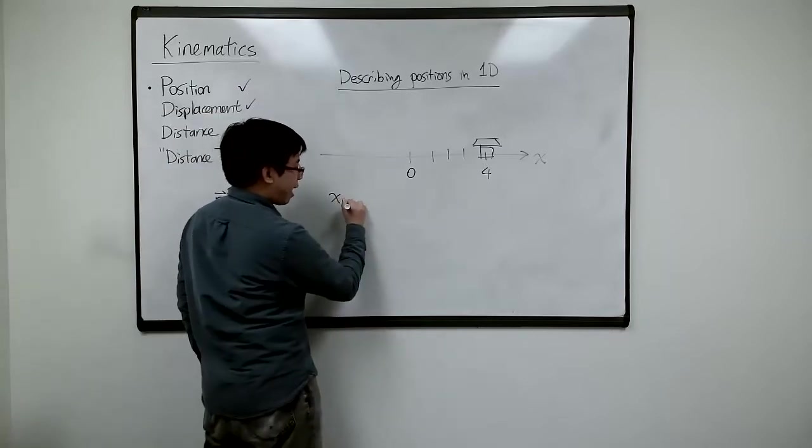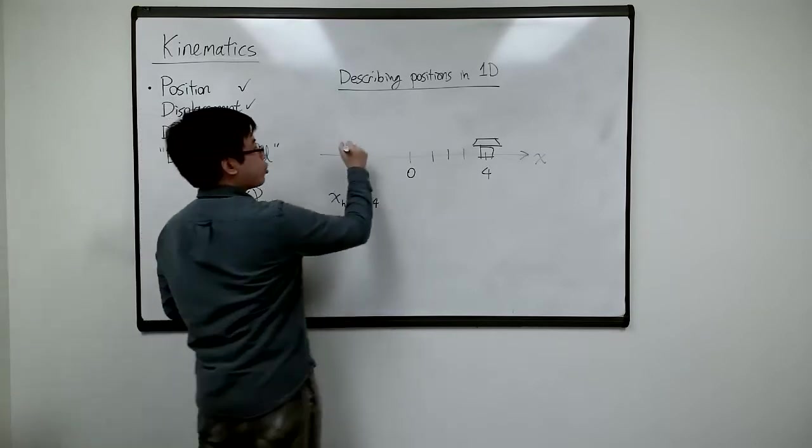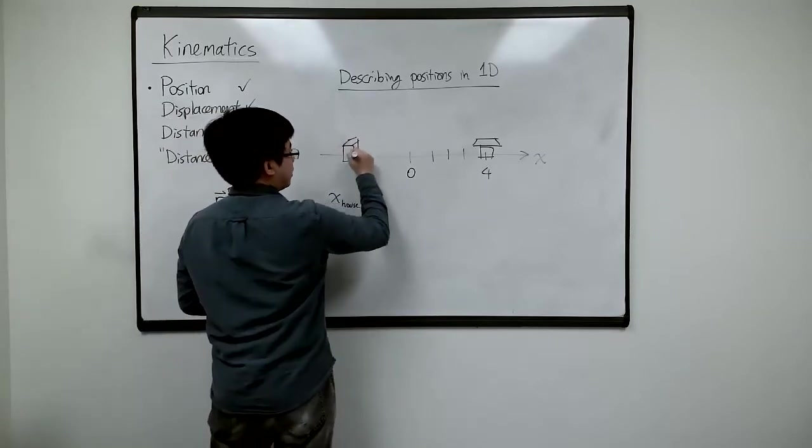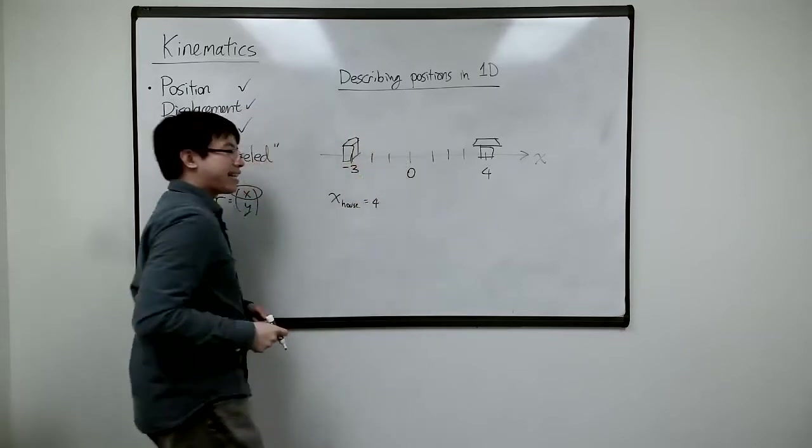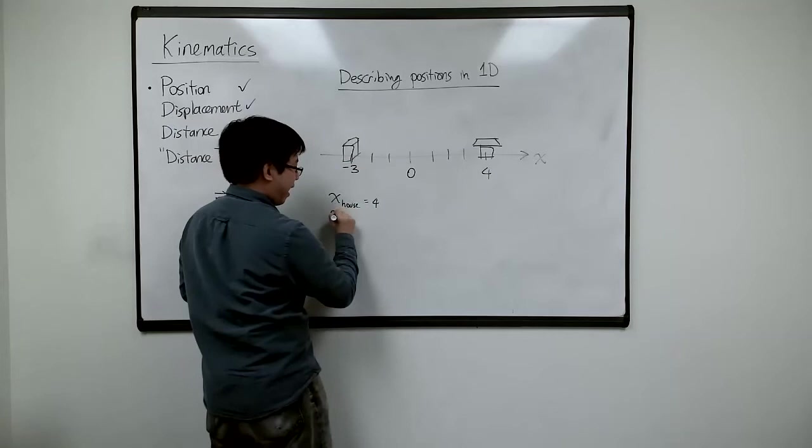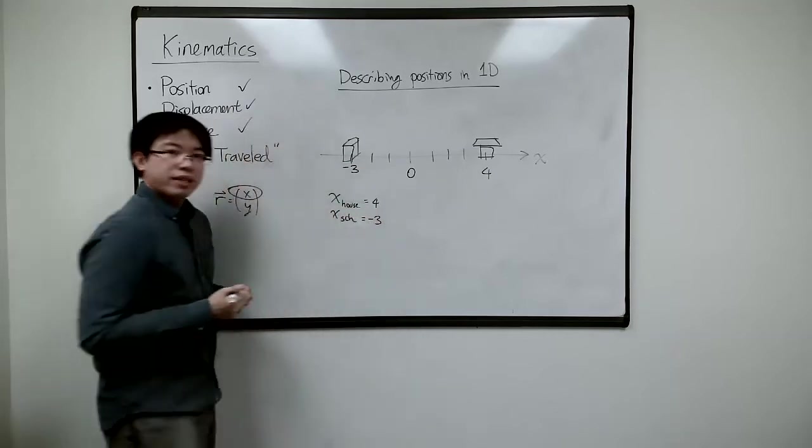So I can say x of the house is equals to four. And if my school is over here, again, it's a box. Let's say it's at negative three, then I can go like x of school is minus three, like that.